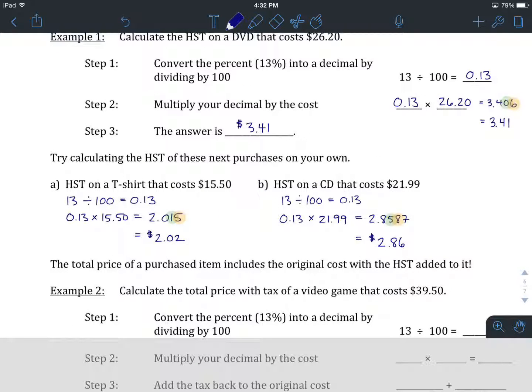That's how you go about calculating the HST, or the tax, on an item that you're going to purchase. But, what if we want to know, not just the HST, but the final price that you pay? If you step up to the counter at your favorite neighborhood store, and you buy a CD, how much is it actually going to cost you? Not just the HST, but the whole package. Tax gets added back to that original price of the item. Let's tackle that in example number two.